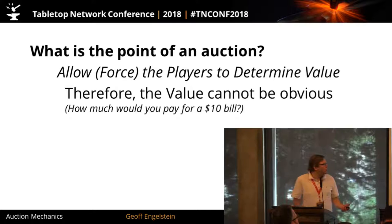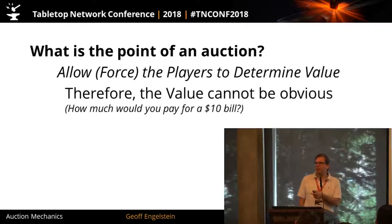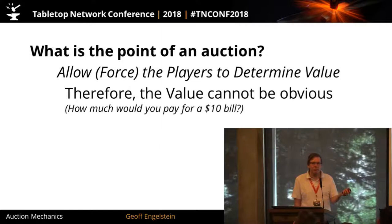In order for forcing the players to determine the value, that means the value can't be obvious. For example, if you're going to auction off a $10 bill, people might bid up to $9, but a $10 bill is going to go for $10. So if the value of what you're auctioning off is super obvious, then your auction mechanic is not going to work.